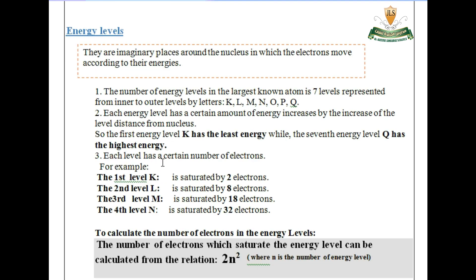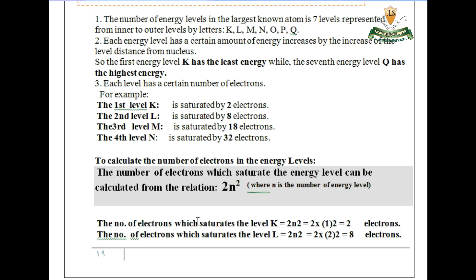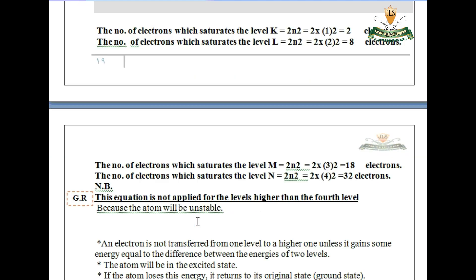Now let's look at the number of electrons that saturate each level. The first level K is saturated by 2 electrons, the second level L by 8, the third level M by 18, and the fourth level N by 32. These numbers can be calculated from the relation 2n², where n is the level number.